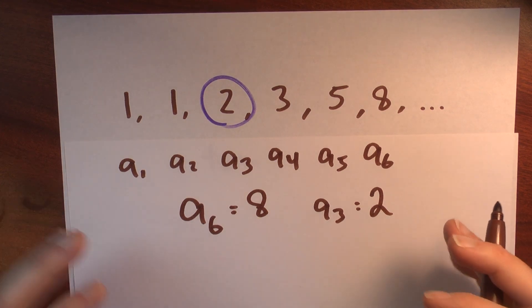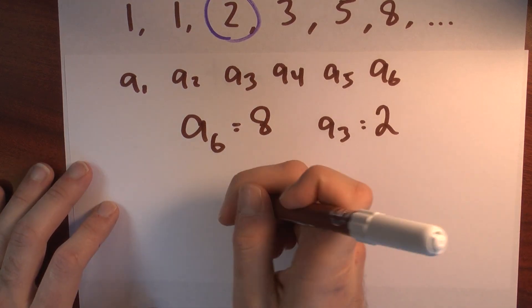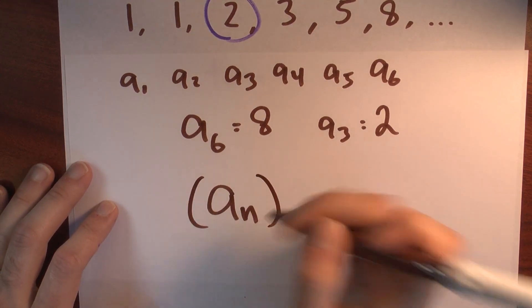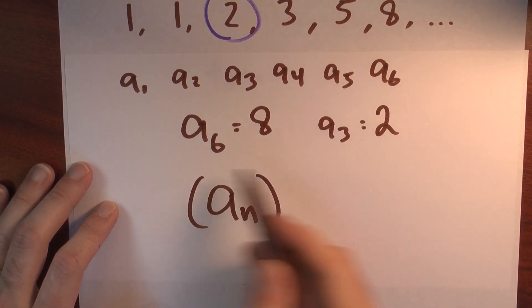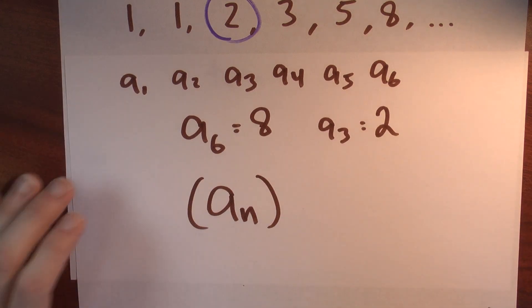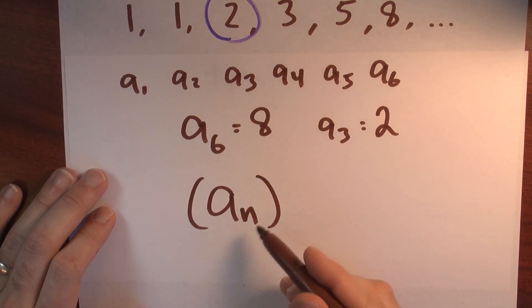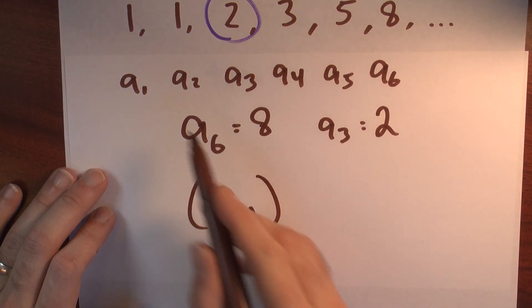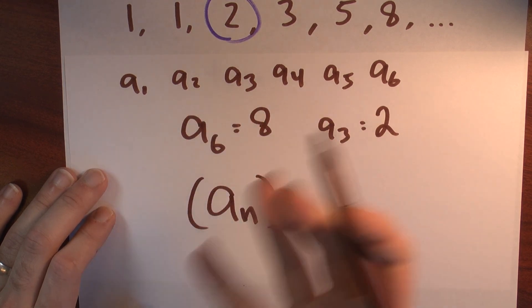If I want to talk about the sequence as a whole, I'll perhaps just write down a sub n, maybe in parentheses, and I'll use this notation to talk about the entire sequence. But by plugging in different values for n, I can then speak of specific terms in the sequence.